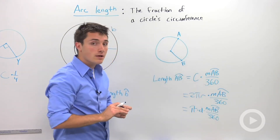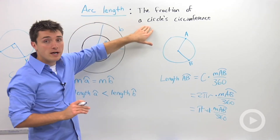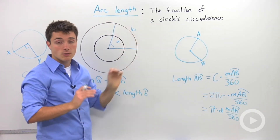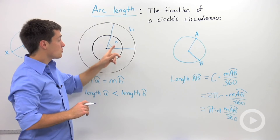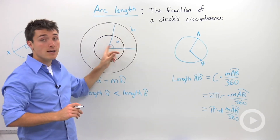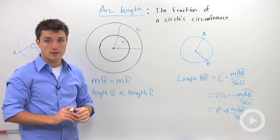The key thing here is that arc length is a fraction of the circle's circumference. So we're talking about a distance, which is why you can have the same arc measure but different arc lengths.